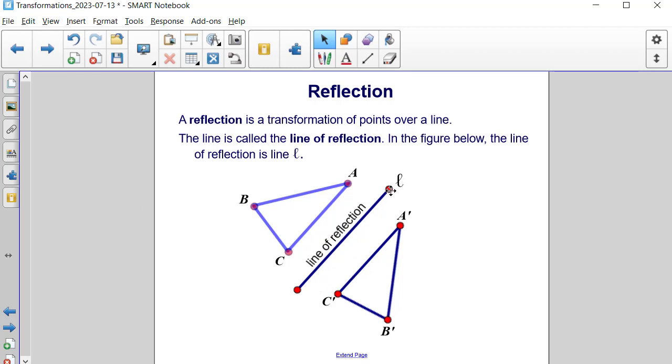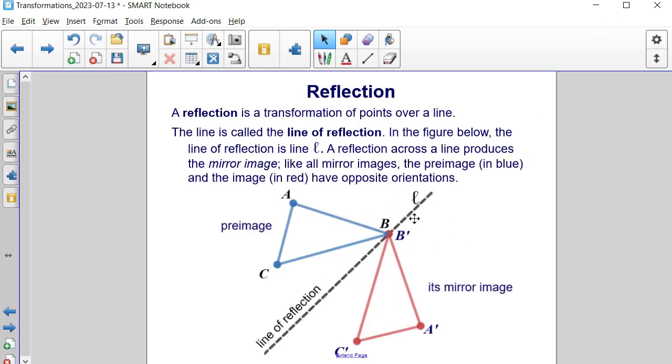In the figure below, the line of reflection is noted by the cursive L, and you can see that we're starting with our original triangle, triangle ABC, and we're reflecting it over top of this line. You can see how the reflection travels over the line to the other side. In the figure shown below here, the line of reflection is again line L.